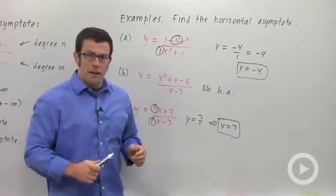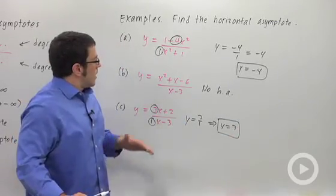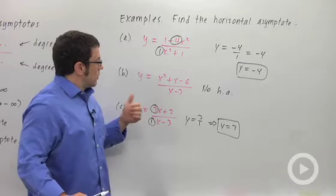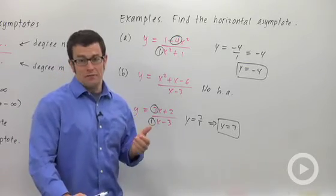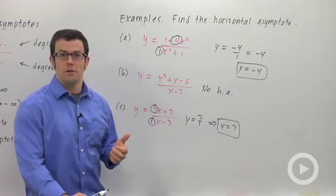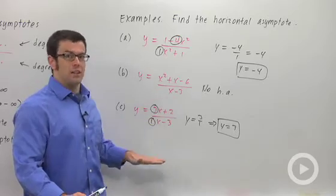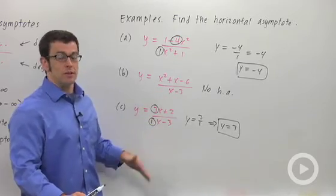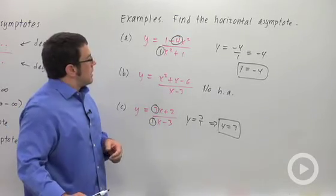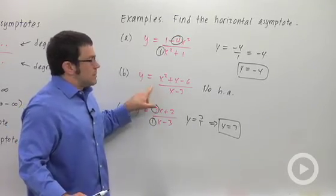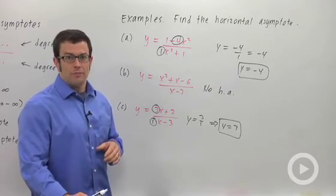It's really easy to find horizontal asymptotes when the degree of the numerator is the same as the degree of the denominator. If the degree of the numerator is less than the degree of the denominator, it's always y equals 0. We'll come to the case when the degree of the numerator is larger later.